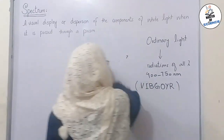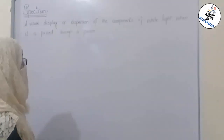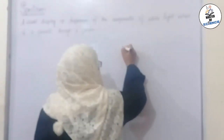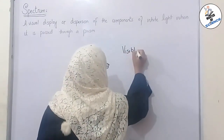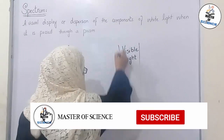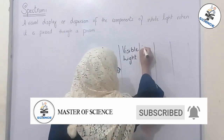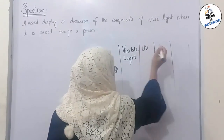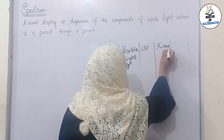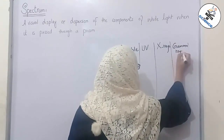Now, coming towards further explanation. We are discussing visible light, but besides visible light, other types of radiation are also there. These are UV (ultraviolet), X-rays, gamma rays, and cosmic rays.